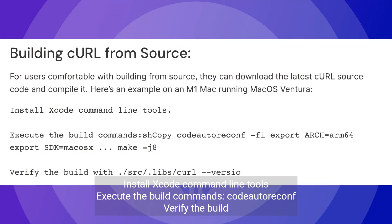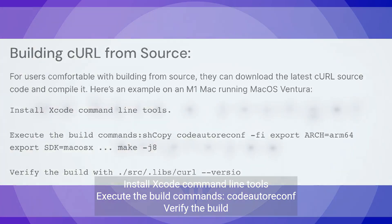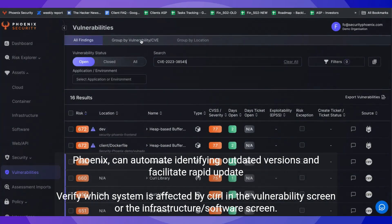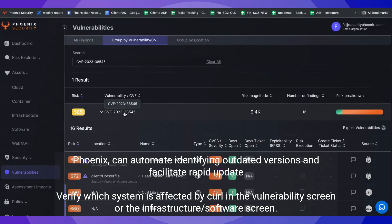To build from source on macOS, install Xcode command line tools and execute the build commands. Set export ARCH=arm64 and export SDK=macosx, then run make -j8. Verify the build by checking the version at src/.libs/curl --version.